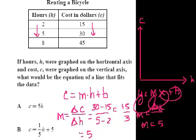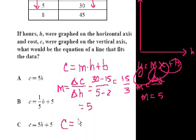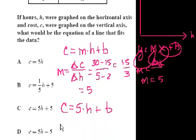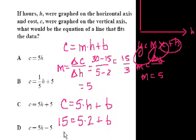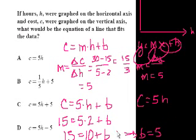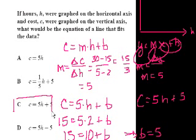Now we figure out the y-intercept. The equation is cost equals 5 times hours plus b. We substitute the point where h equals 2 and c equals 15: 15 equals 5 times 2 plus b, so 15 equals 10 plus b. Subtracting 10 from both sides gives b equals 5. The equation is c equals 5h plus 5, which is choice C.